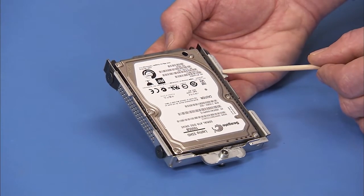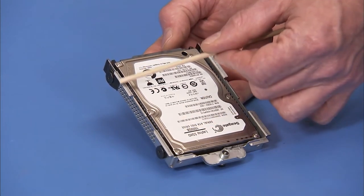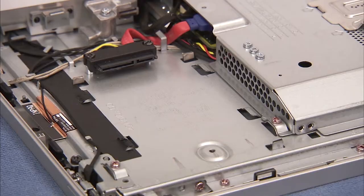The hard drive cage has four tabs on the bottom sides that slide underneath four other tabs inside the PC.